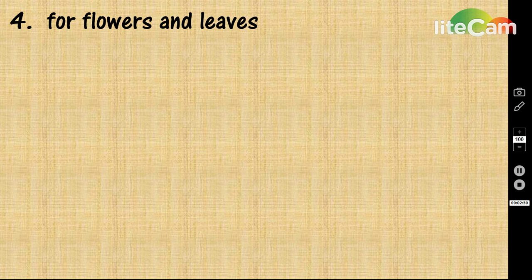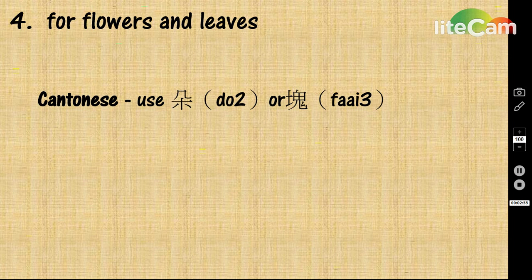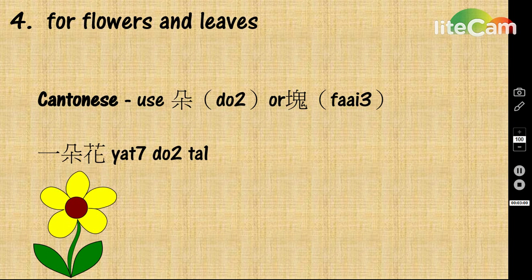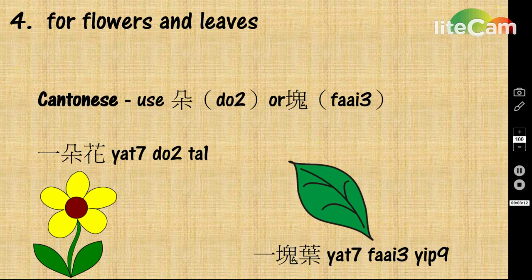For flowers and leaves, 朵 or 片 are used. 一朵花 means a flower. 一片葉 means a leaf.